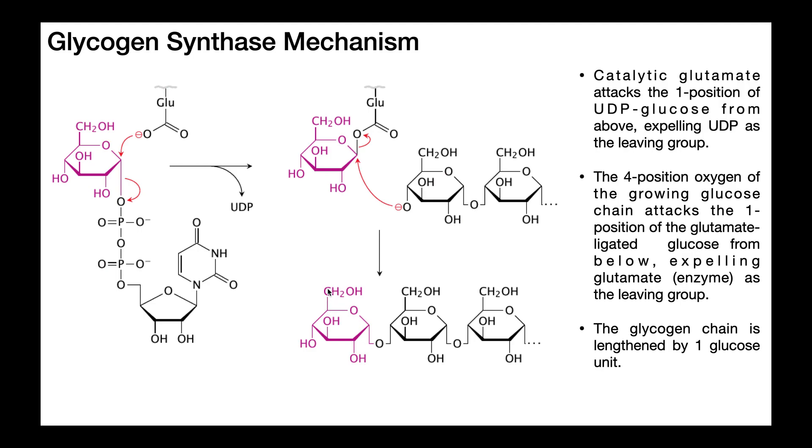Notice the CH2OH is going up, whereas this oxygen is coming off down from the anomeric carbon. So because those two positions are going in opposite directions, this anomeric carbon is in the alpha conformation.